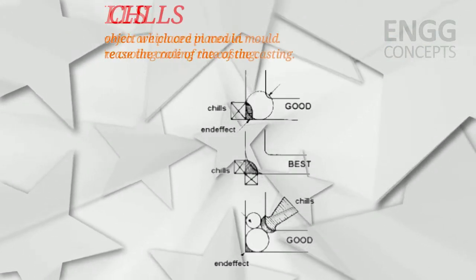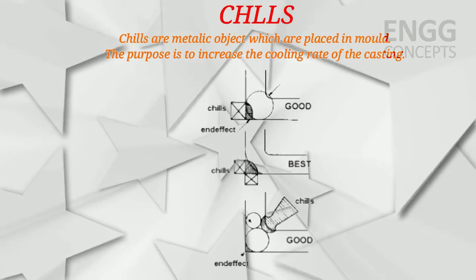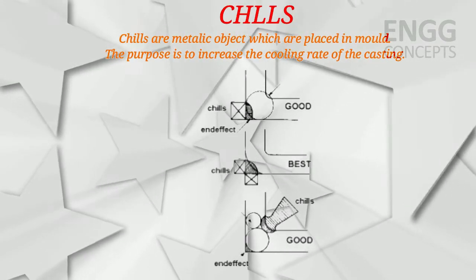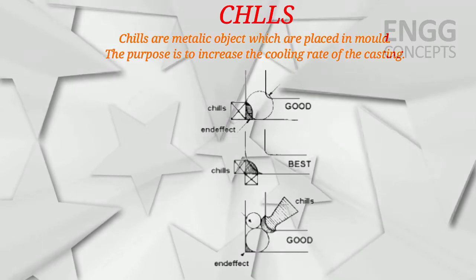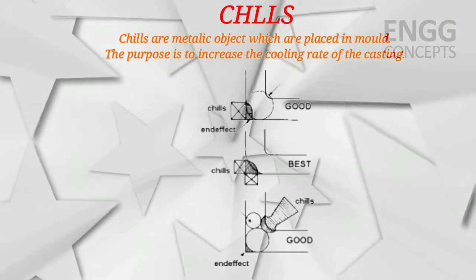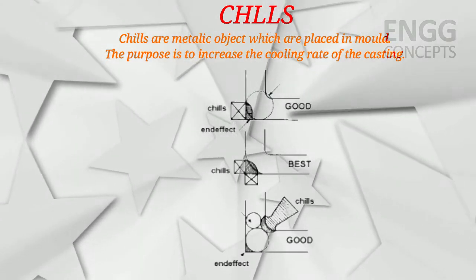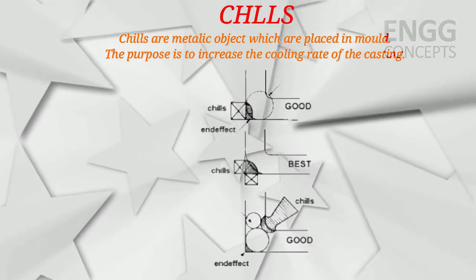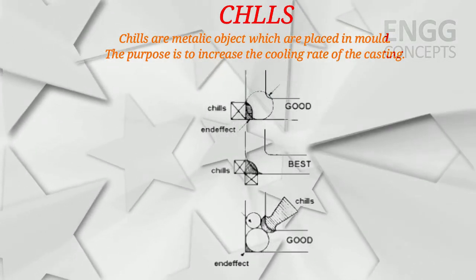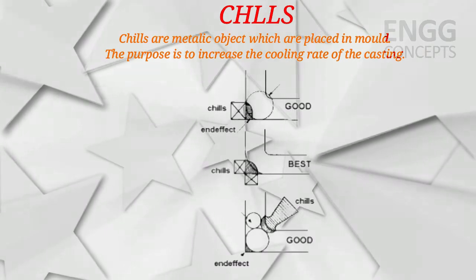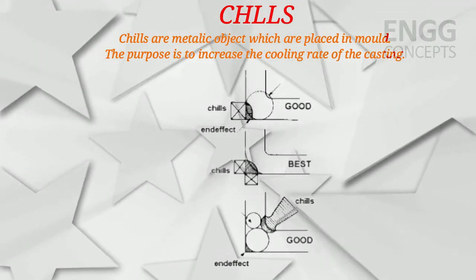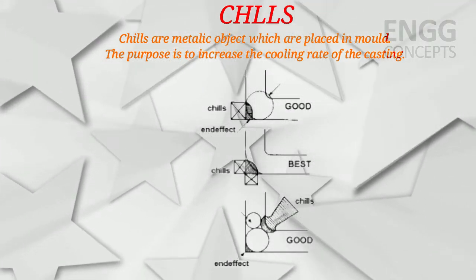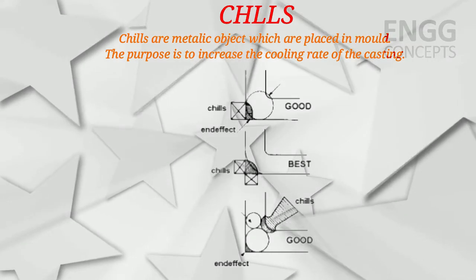Chills are metallic objects placed in the mold. Their purpose is to increase the cooling rate of the casting. They are placed at selective specific locations to ensure good directional solidification of the casting. Chills are not part of the final casting.